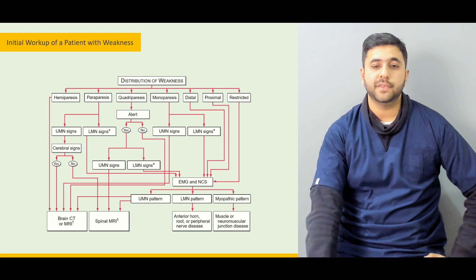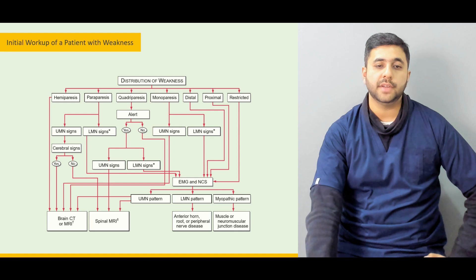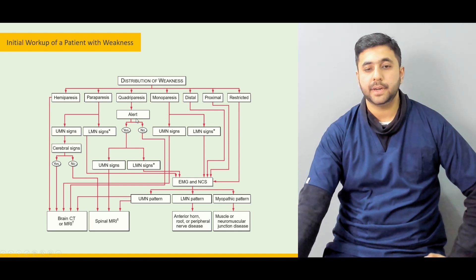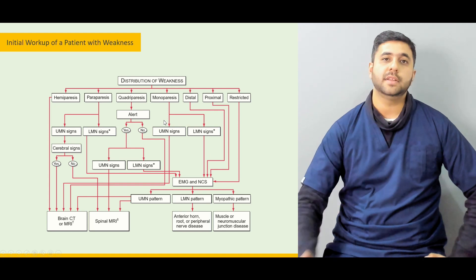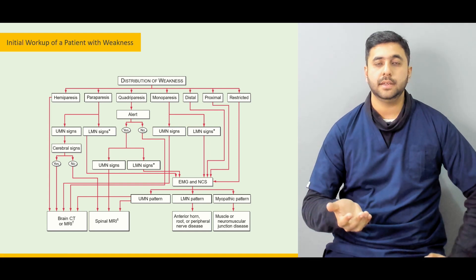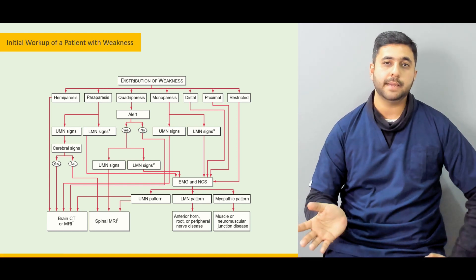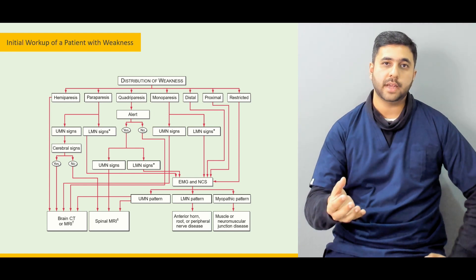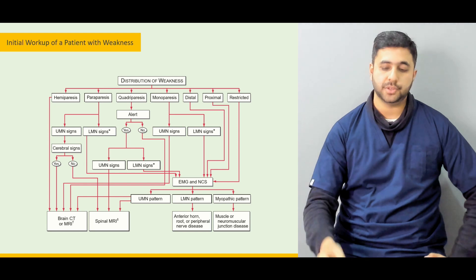Then at the end, we give you a neat flowchart to find out how we initially work up a patient with weakness — how do we work up a patient with hemiparesis or quadriparesis, whether we go for a spinal MRI first, a brain CT first, or an EMG first. All of this is derived from a history and clinical examination.